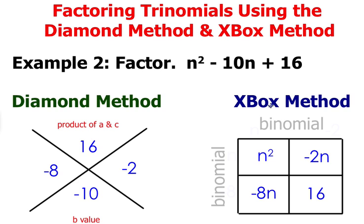Now look at the first column. Think of a common factor between n² and negative 8n. The common factor is n.